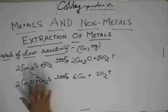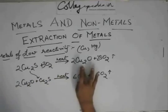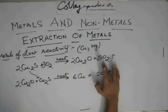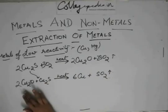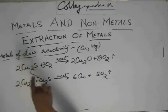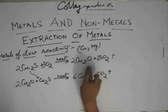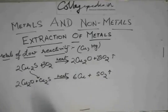Slightly different reaction. In this first you get Cu2O and SO2, and then you heat it with the ore itself. You heat the oxide with the ore itself and you get the pure metal and again the same gas is involved.